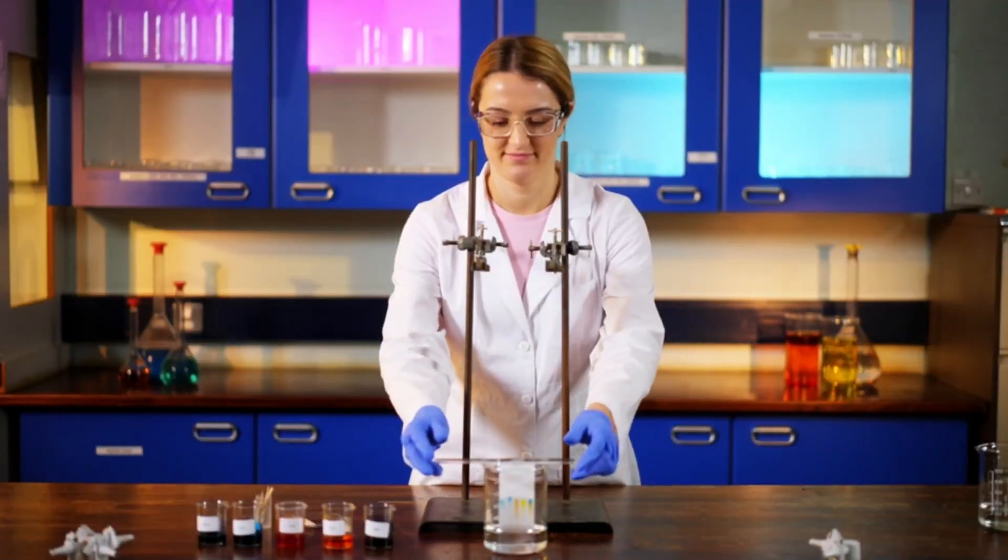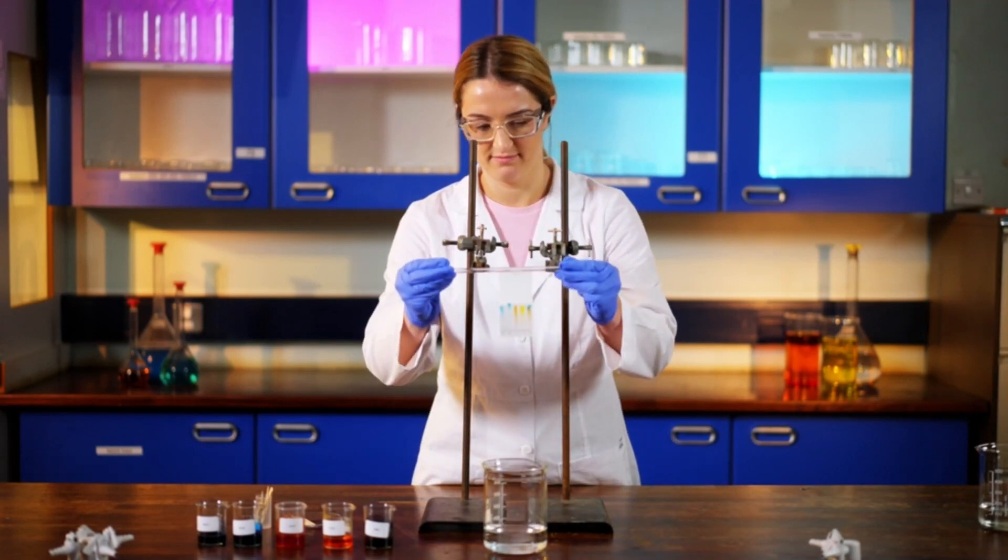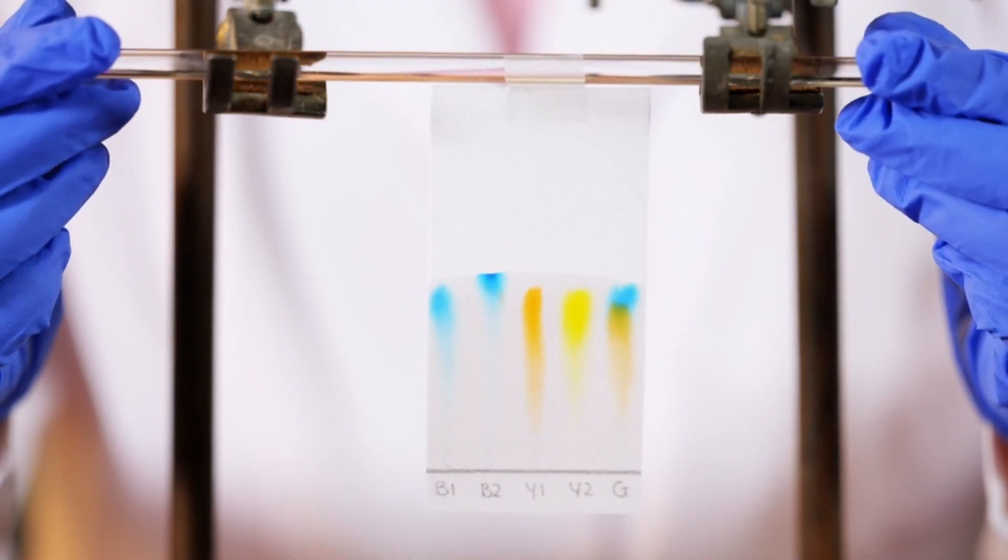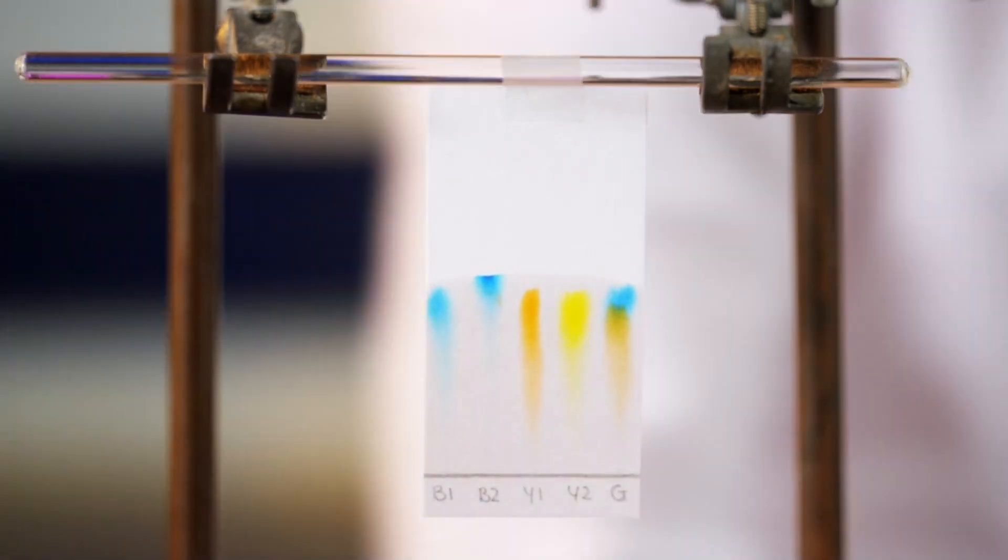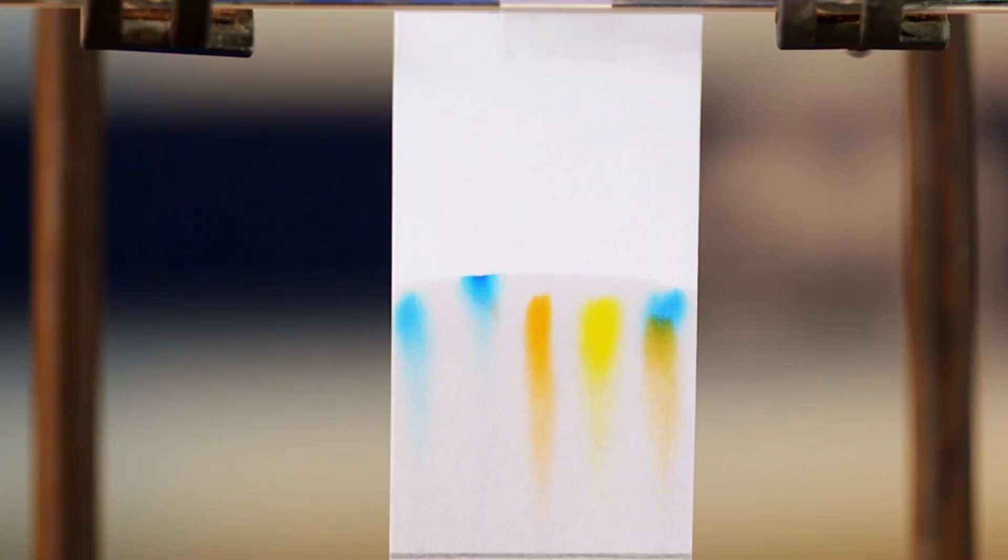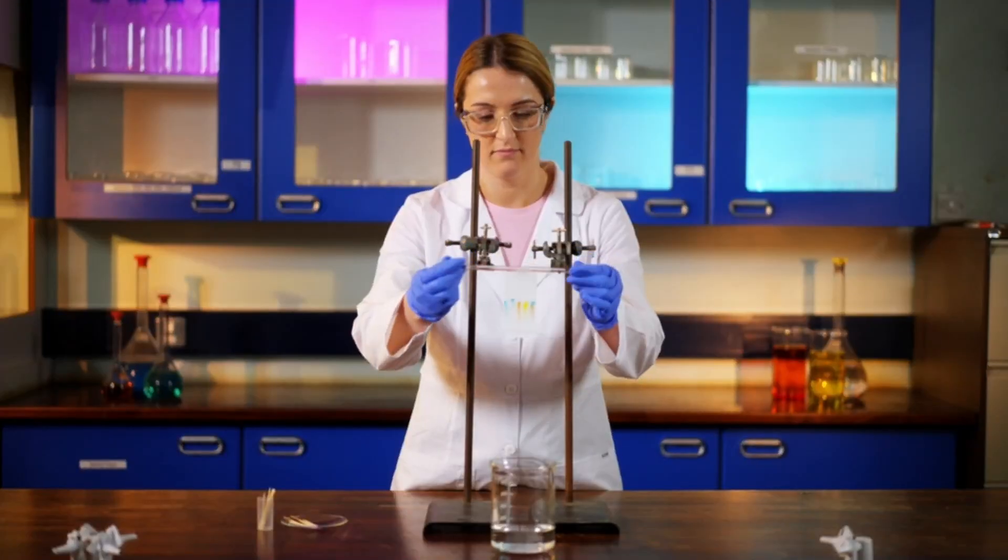Once the water has stopped rising, you can carefully remove it from the beaker. You can see that the food colorings have separated out to form a pattern called a chromatogram. The chromatogram shows us the number of pigments each food coloring contains.